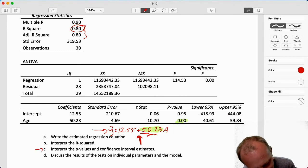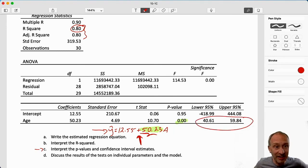That interval, I'm 95% confident that for each additional year in age that you are, average salary increases by $40,610 up to $59,840. I'll say that again, because I know sometimes these are a little bit tricky. I'm 95% confident that for each additional year in age that you are, average salary increases by $40,610 up to $59,840. So that's our interval.